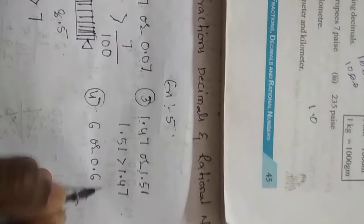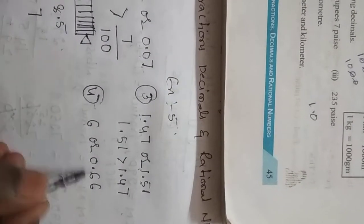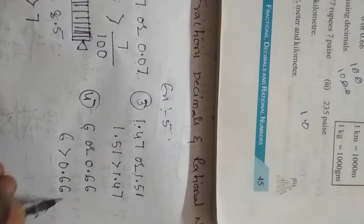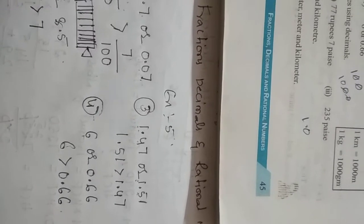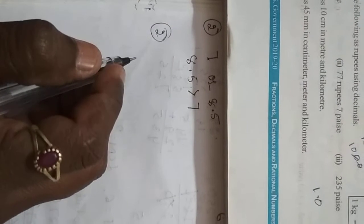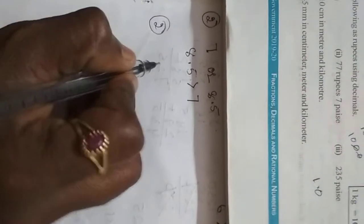Fourth one: 6 or 0.66, which is greater? Now, here 0 is there, here 6. 6 is greater than 0.66. Next, second bit: express the following as rupees using decimals.